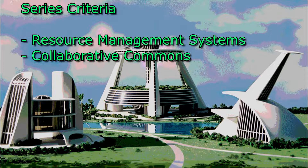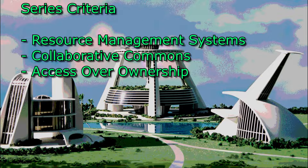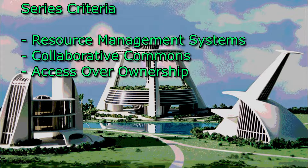Secondly, we need to discuss how we can optimize the distribution of goods and services so that such is equitable and sustainable. Here, we will cover the concept of access over ownership, where people are able to access and use the things they need without exactly owning them. In order for goods and services to be accessed freely and equitably, they also need to be readily available. Producing things and distributing them closer to home, rather than further afield, would greatly improve efficiency and sustainability. Therefore, something we will also discuss in this series is the concept of localization.